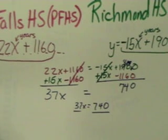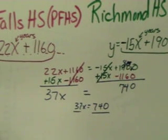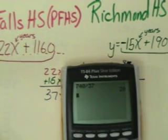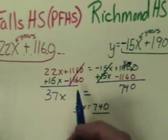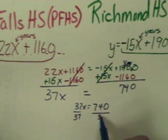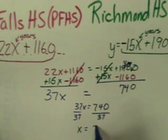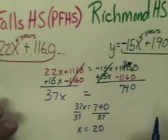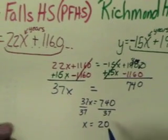So 37x equals 740. If I divide both sides by 37, I'll get 740 divided by 37 is 20. And so I now know the x value.